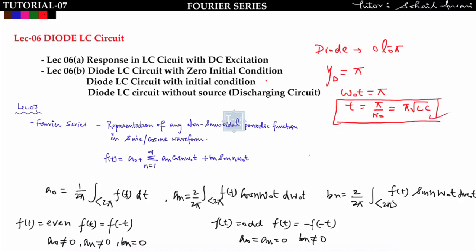In this lecture we will start Fourier series and look at some functions to find the Fourier series of different waveforms. Fourier series is the representation of any non-sinusoidal periodic function in terms of sine or cosine waveforms.